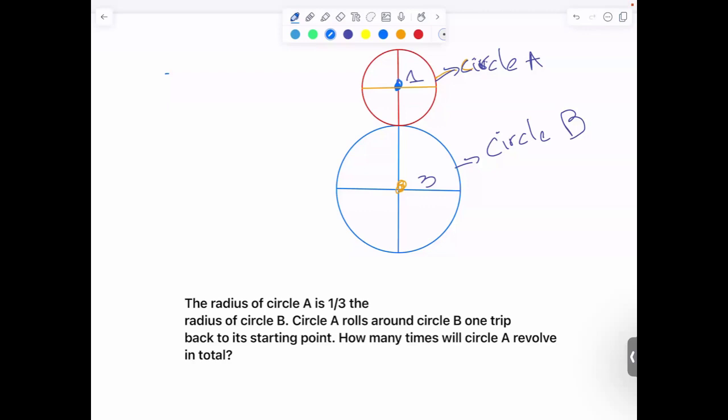This is very simple to solve because, for example, the circumference for circle A is 2π.